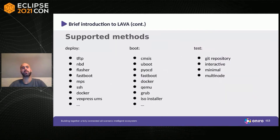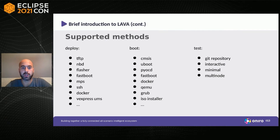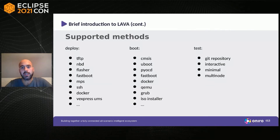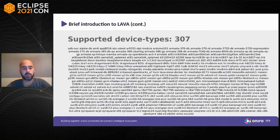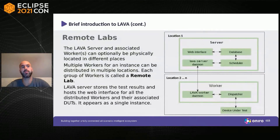Supported deploy methods range from TFTP to SSH and Docker. For boot, we support U-Boot, PiCO, Fastboot, Docker, QEMU, and many others. For test deployment, we use Git repositories with interactive or multi-node modes. We have over 300 supported devices in LAVA — a project that is over 10 years mature.